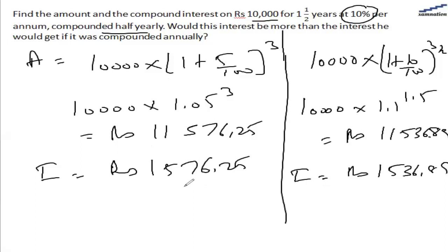So as you can see, the amount and the interest in the half yearly compounding is more than the amount and interest in the annual compounding.